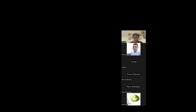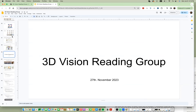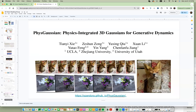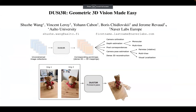Happy new year, everyone. We're having two papers today again. I'm going to present DUSt3R. This is a bit of a longer paper than usual. DUSt3R: Geometric 3D Vision Made Easy was a paper that came out over the holidays, and it's about solving 3D geometry altogether.